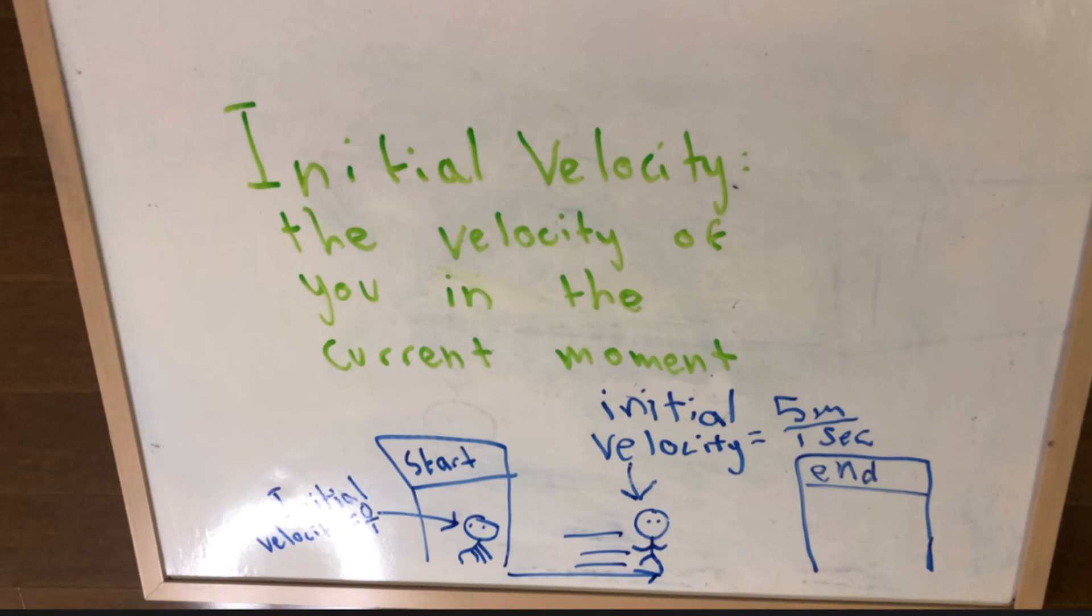But like halfway through the race, your initial velocity would be 5 meters over 1 second. So initial velocity is basically how fast you are going right now.